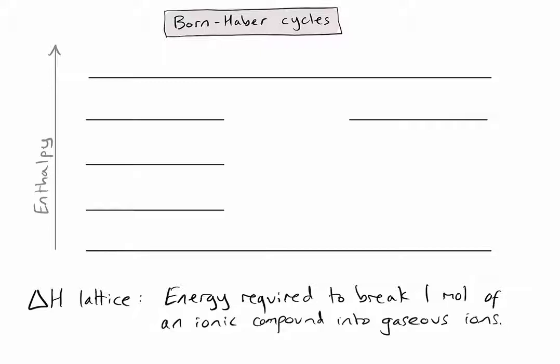I'm going to take an example of sodium chloride for which we want to calculate the lattice enthalpy. The enthalpy of the sodium chloride ionic compound is going to be represented by the bottom line in this diagram, and I'm going to add the gaseous ions to the line directly above it. Therefore, this change in enthalpy is going to be representing my lattice enthalpy.